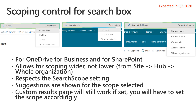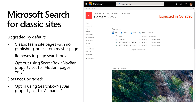Moving on, the other feature I wanted to cover is Microsoft Search for classic sites. This was expected this quarter, but we are having a slight delay with the rollout. We are now testing this inside Microsoft, and I expect this to roll out to targeted release in Q3 and then to broader production customers. The concept is relatively simple but a little difficult to pull off.